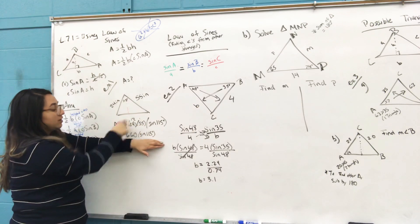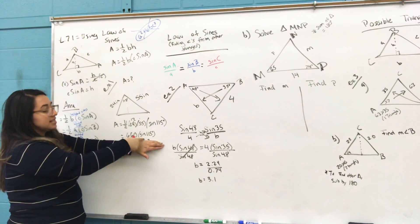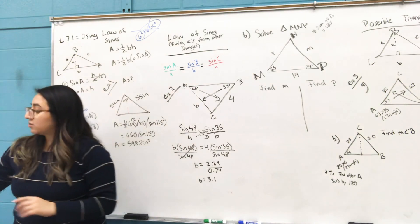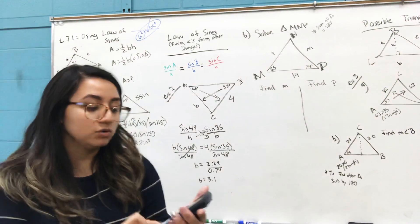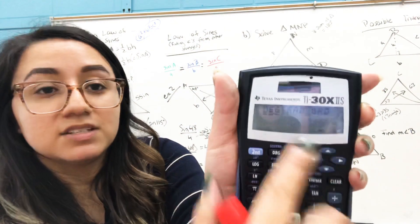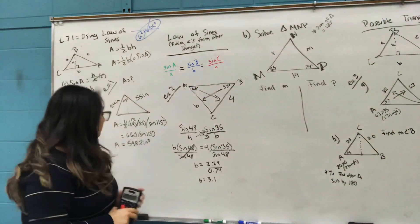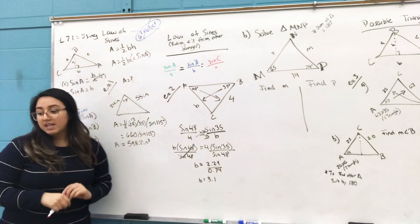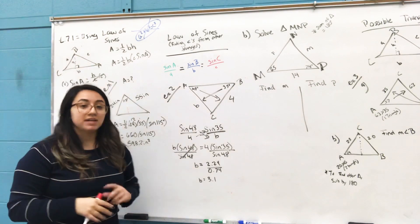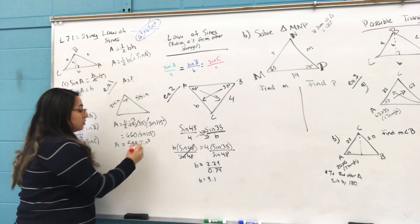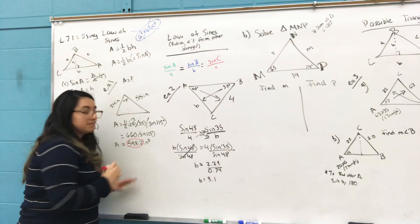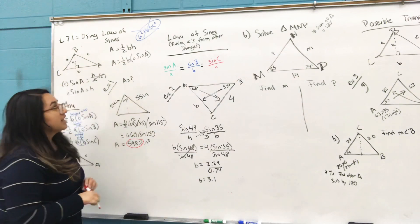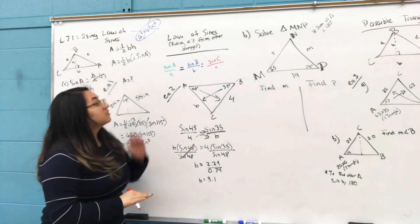So the setup is: one half times 24 times 55 times sine of 115. If you multiply all three numbers together you get 660 times sine of 115. Make sure your calculator is in degree mode — we go back and forth between degrees and radians. Multiply those together and you get 598.2. For the homework, just put in the number; don't worry about units like inches, feet, or meters.